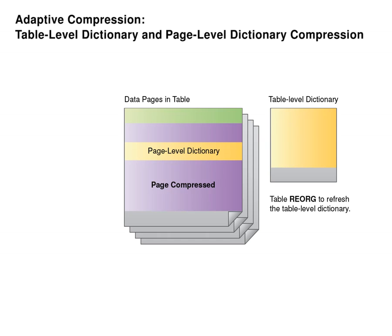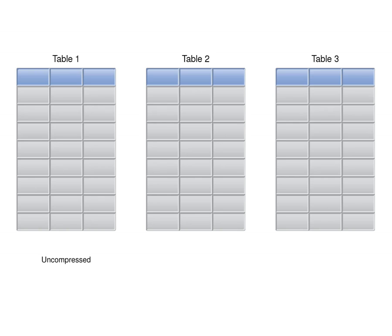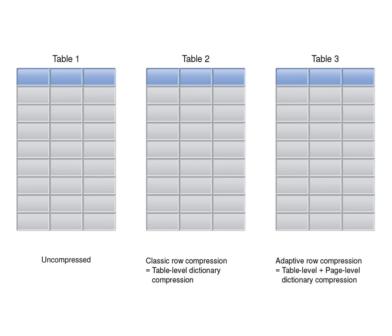Let's look at the benefits of using adaptive compression. For the purposes of this demonstration, we'll create three sample tables and populate them with several hundred thousand rows of data to simulate a data warehouse environment. The first table contains uncompressed data and will serve as a baseline. The second table will use classic row compression with a table-level dictionary. The third table will use adaptive compression to demonstrate the benefit of using page-level compression together with table-level compression.